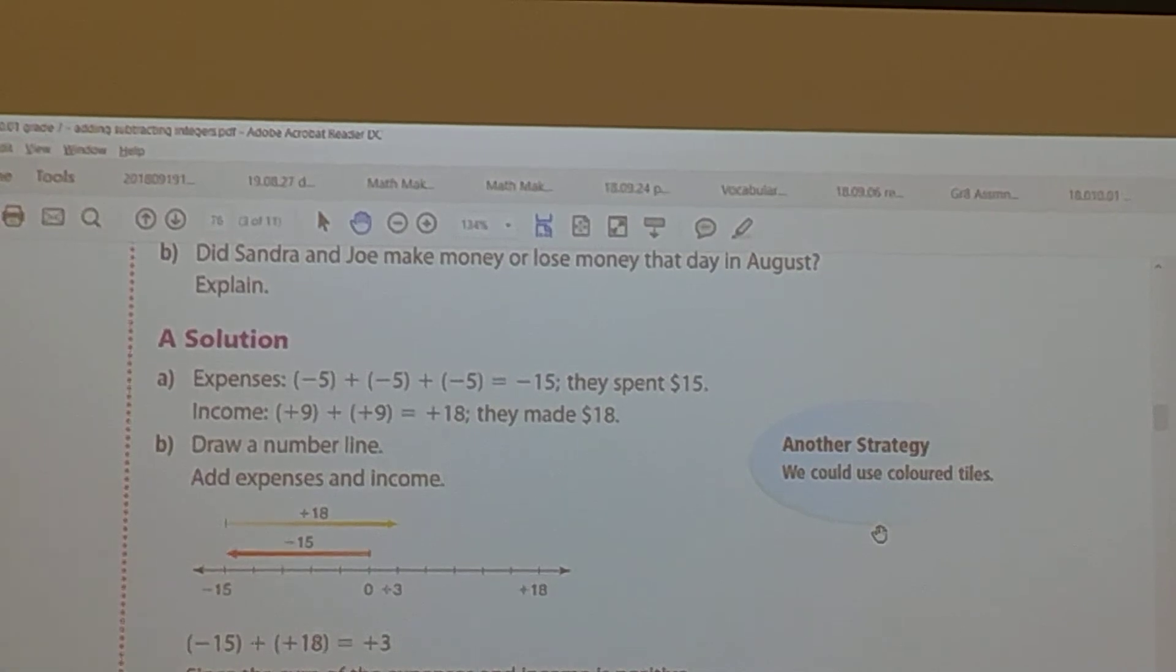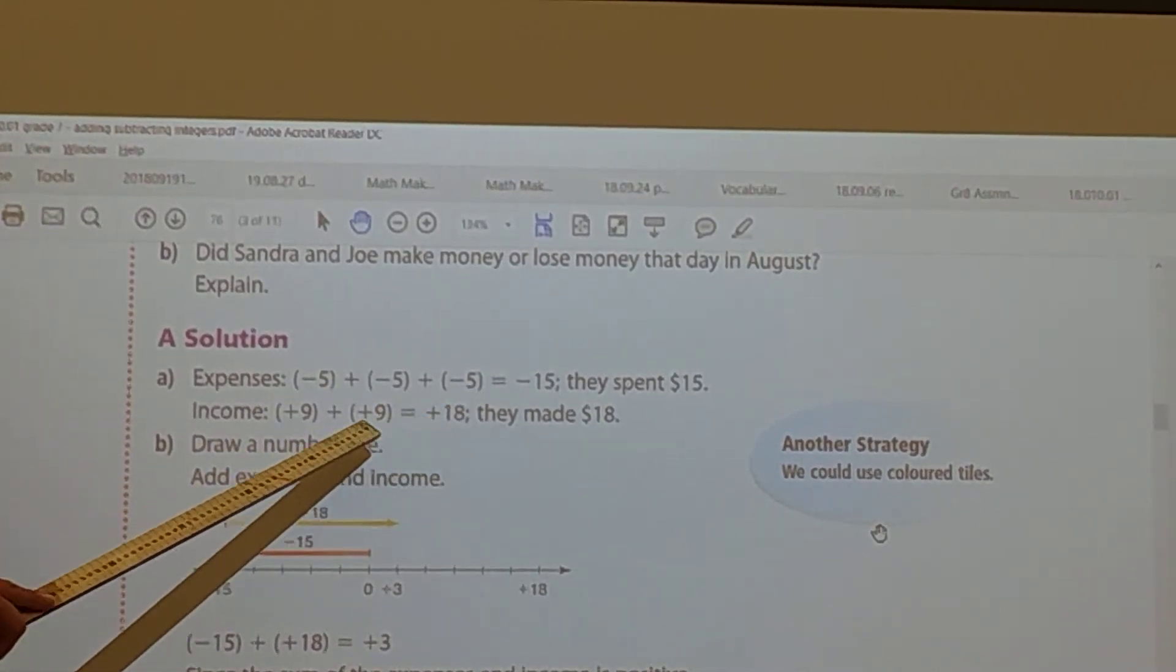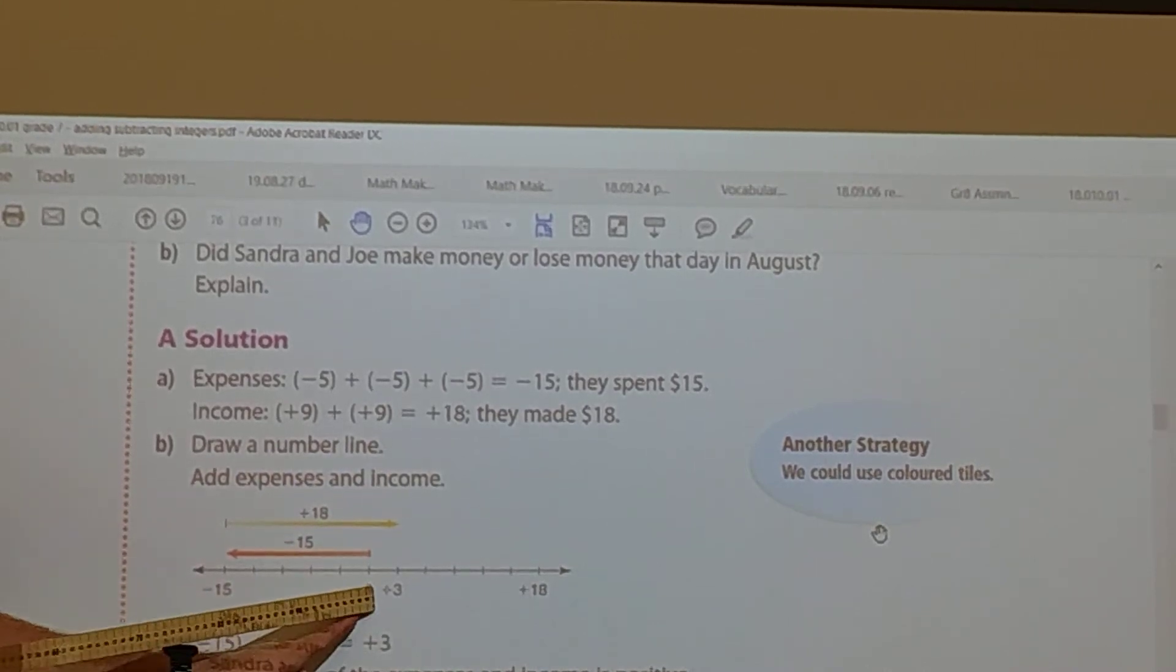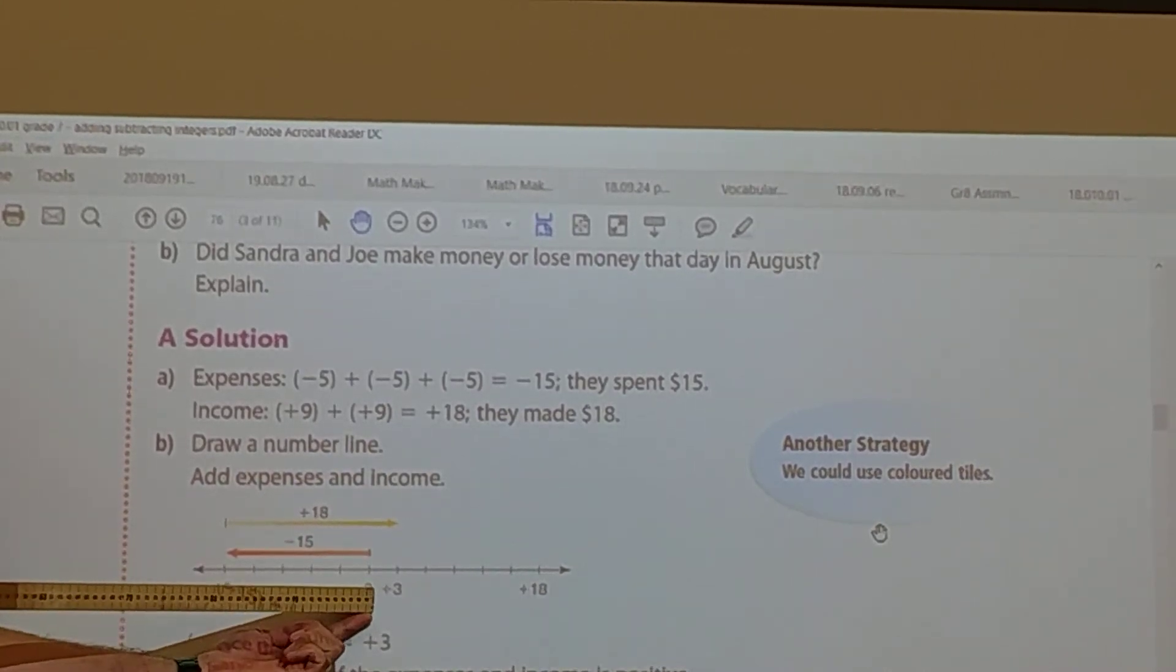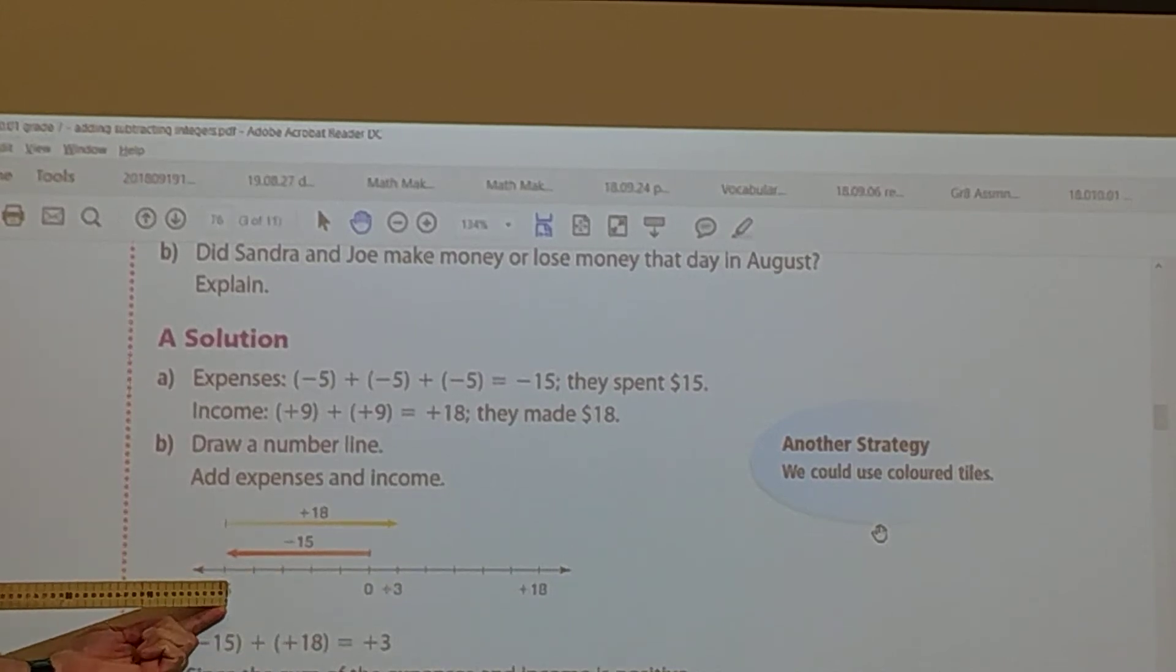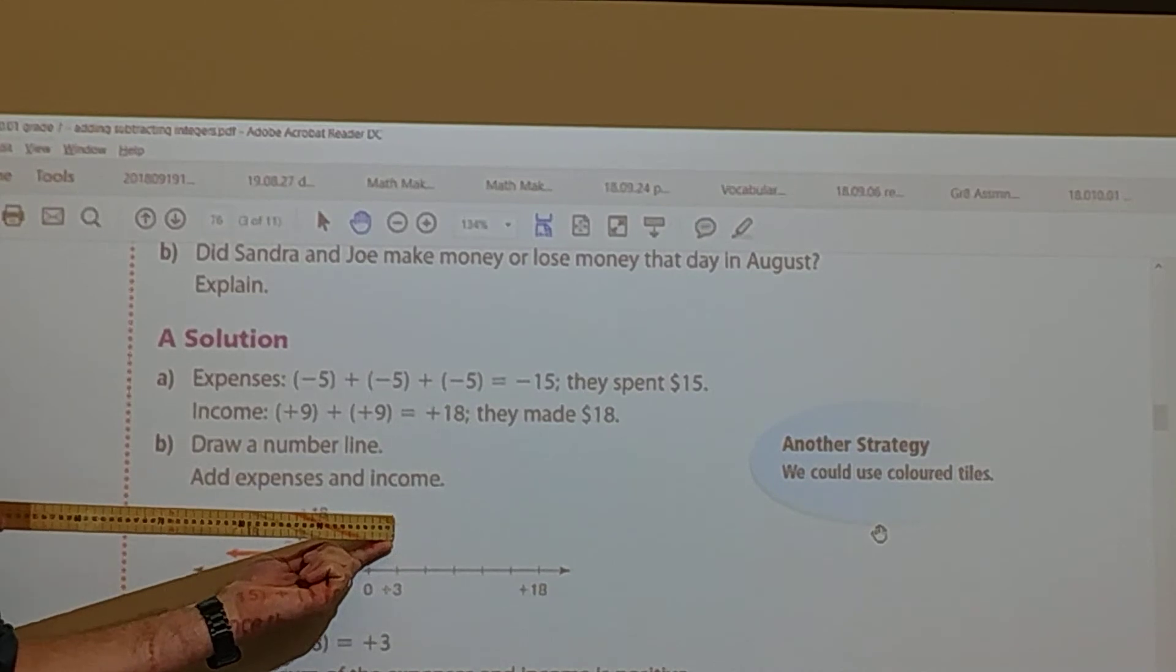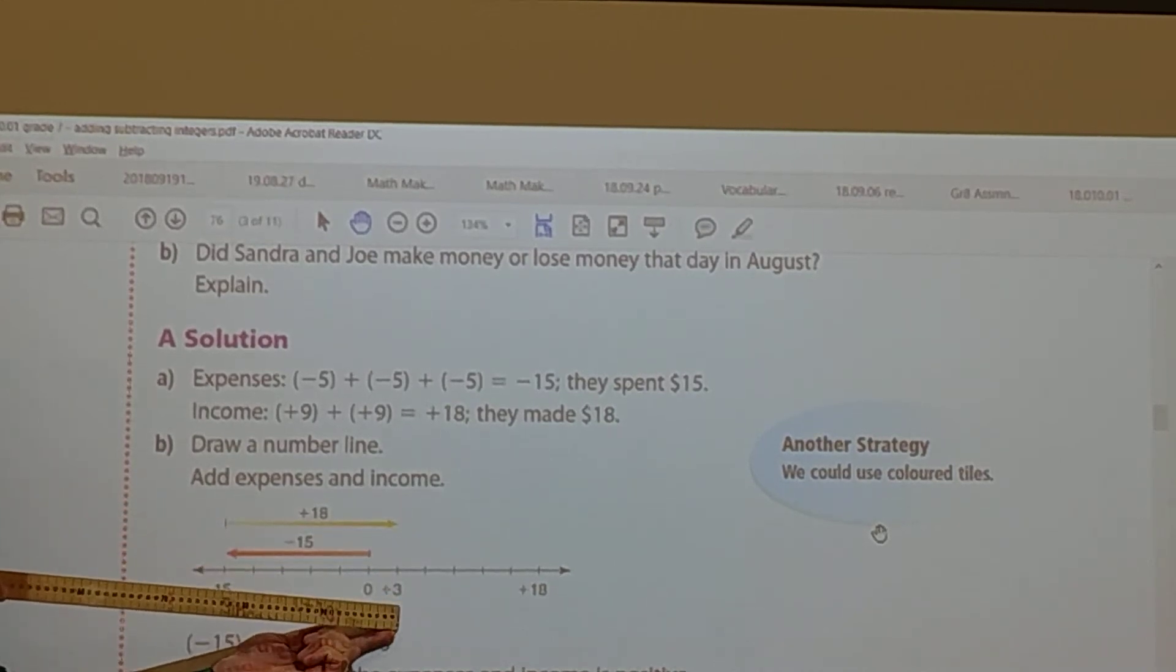So how much do I have now? $3. How much did I start with? Because I spent 5 bucks, spent 5 bucks, spent 5 bucks. I got 9 bucks, I got 9 bucks. Here's my number line. You start at the 0. There's my expenditures. Minus 15 plus positive 18. Where am I ended up? Right at 3.